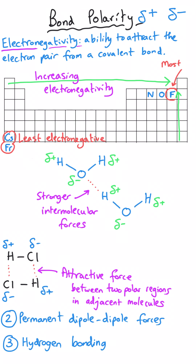There are three intermolecular forces in total. Van der Waals forces are present in all substances. The two that arise due to bond polarity are permanent dipole forces and hydrogen bonding, which are quite similar, but hydrogen bonding is the absolute strongest of the three types. Hydrogen bonding only appears in particular circumstances with particular non-metals. More detail on these forces is available in A-level chemistry videos.